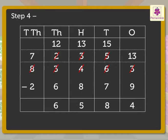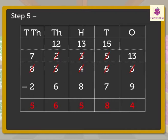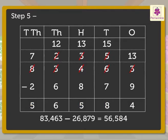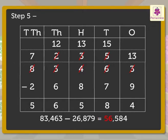Step 5: Subtract the ten thousands. That is, 7 minus 2 is equal to 5. Wow! We got the answer 56,584. That is, 83,463 minus 26,879 is equal to 56,584.